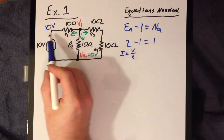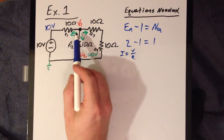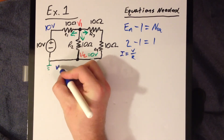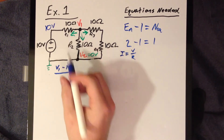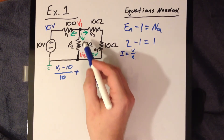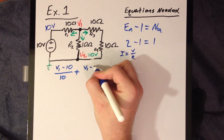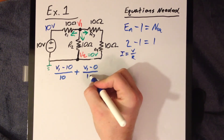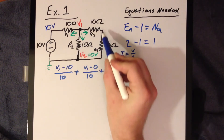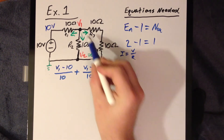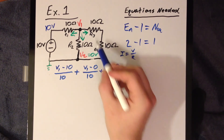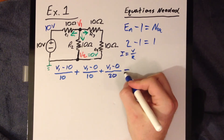Looking at the first branch going from right to left from V1, using Ohm's Law we write V1 minus 10 volts over R1, which is 10 ohms. Next, going from top to bottom, V1 to V2, that's V1 minus 0 over R2, which is 10 ohms. And the last branch going from left to right, skipping the non-essential node, is V1 minus 0 over R3 plus R4, which is 10 plus 10 equals 20. The sum of all three terms equals 0.